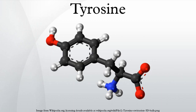Mammals synthesize tyrosine from the essential amino acid phenylalanine, which is derived from food. The conversion of phenylalanine to tyrosine is catalyzed by the enzyme phenylalanine hydroxylase, which catalyzes the addition of a hydroxyl group to the end of the 6-carbon aromatic ring of phenylalanine, such that it becomes tyrosine.